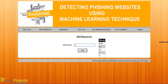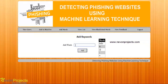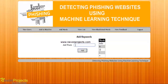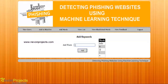When the user enters a URL, those keywords will be checked. If a keyword is found in the keyword table, the system will reject that URL and inform the user that the website is blacklisted. These keywords will be searched in the meta tag as well as in the title.